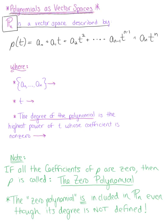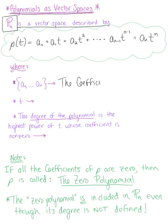This looks familiar — it looks like a linear combination. So let's describe what these things mean. A polynomial as a vector space is still, at the end of the day, a polynomial. The set of all these 'a' values are the coefficients. We're restricting ourselves to the reals, so these are constants. T, like in a traditional polynomial, is the variable.